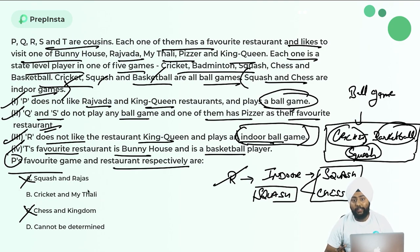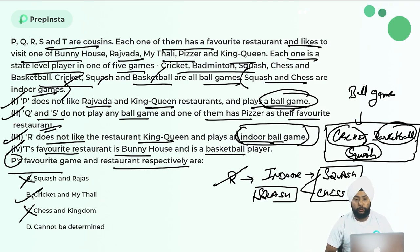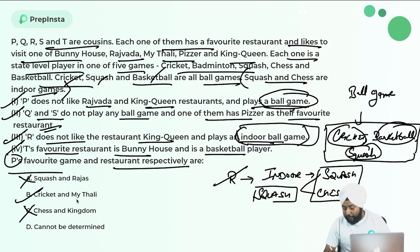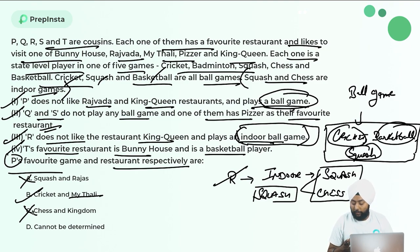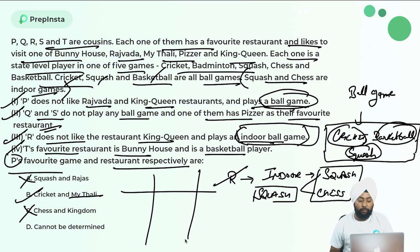P does not like Rajwada or King Queen. Canceling those out, the remaining restaurant for P is Mithali. So I've eliminated two wrong options and arrived at option B — cricket and Mithali — as the correct answer. There was no need to draw the full table; this shortcut of eliminating wrong options gets you the answer directly.